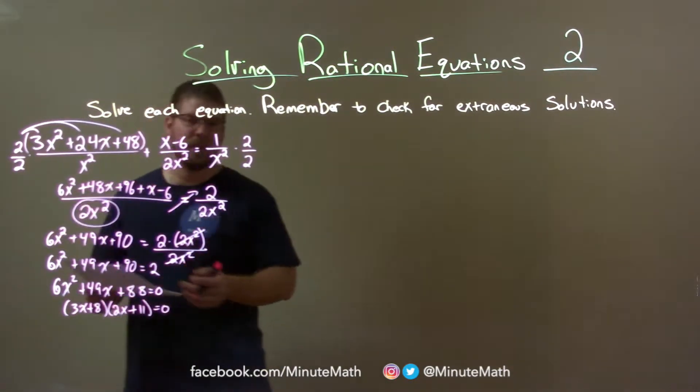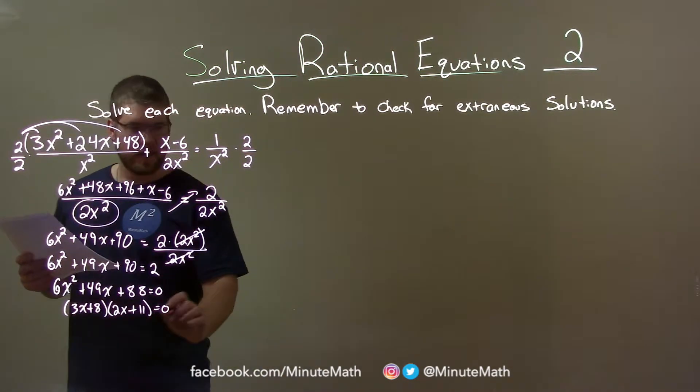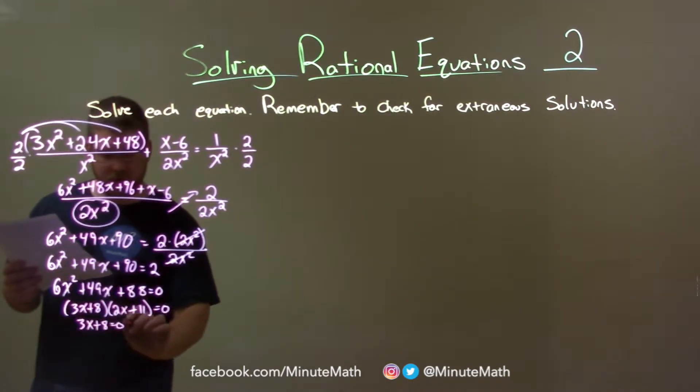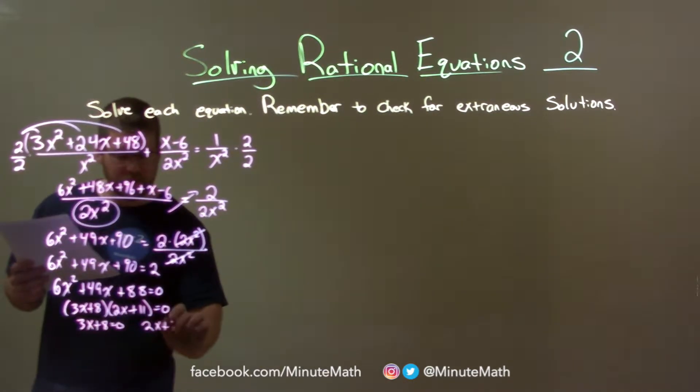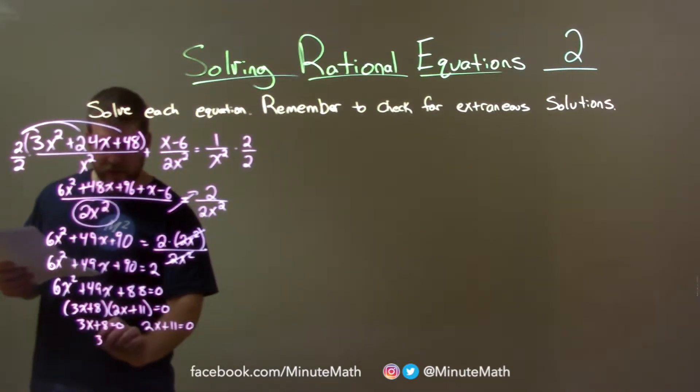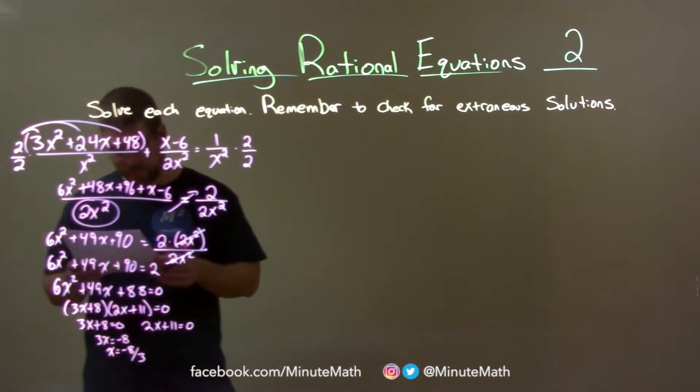Now we can set each one equal to 0 and solve for x. We have 3x plus 8 equals 0. Subtract 8 from both sides, 3x equals negative 8, and divide through both sides, x is negative 8 thirds.